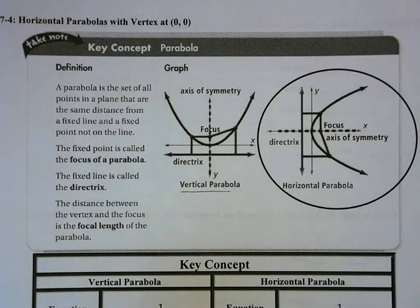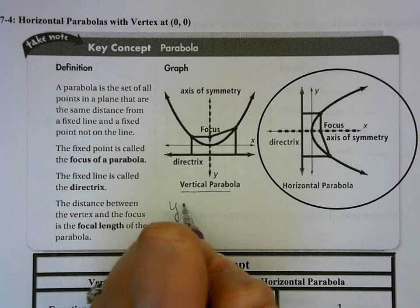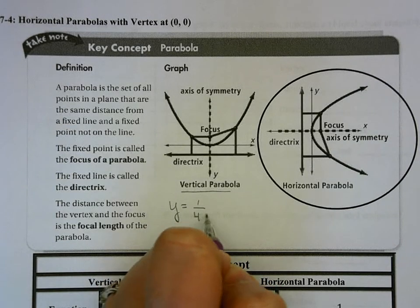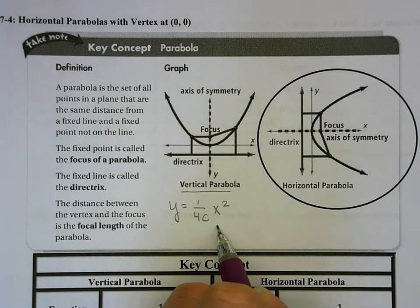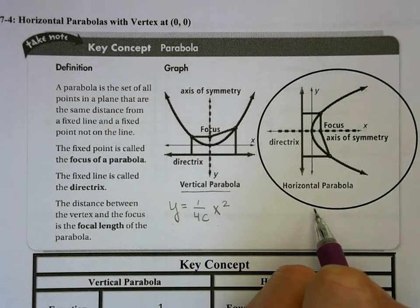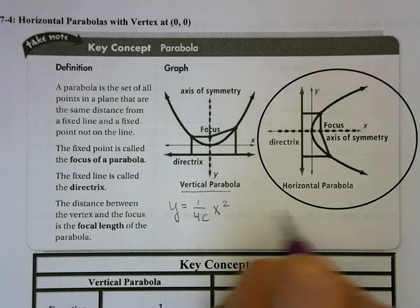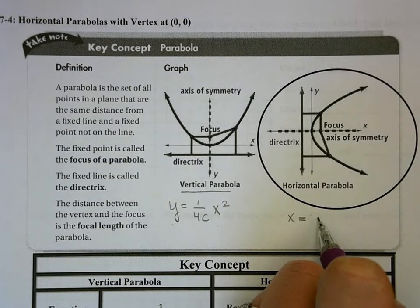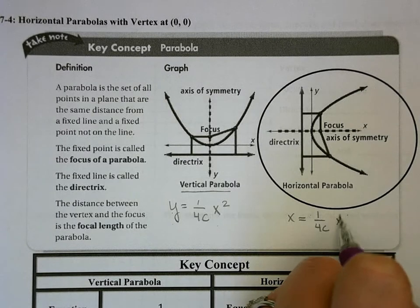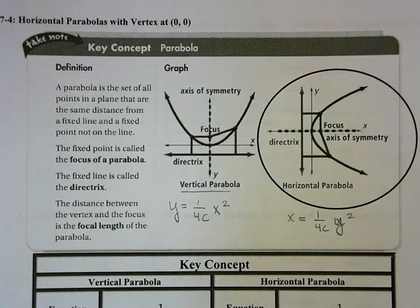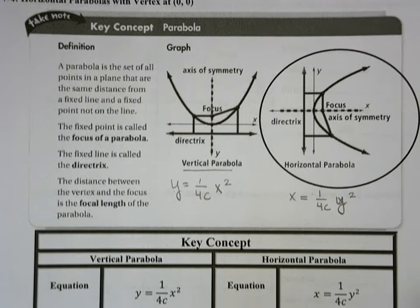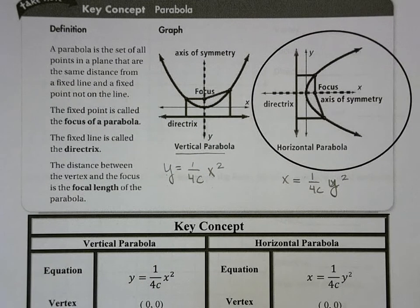We know the basic equation for a vertical parabola is y equals 1 over 4c times x squared, so y is a function of x. When we go sideways to create a horizontal parabola, our x and y values get switched — that's the inverse. So instead of y equals, it becomes x equals 1 over 4c times y squared.